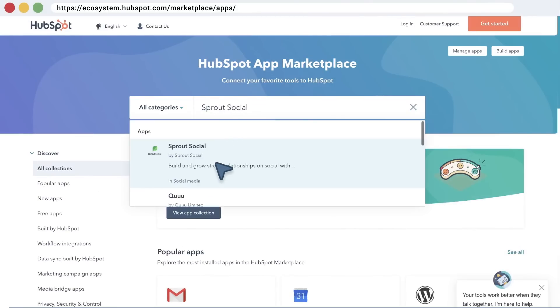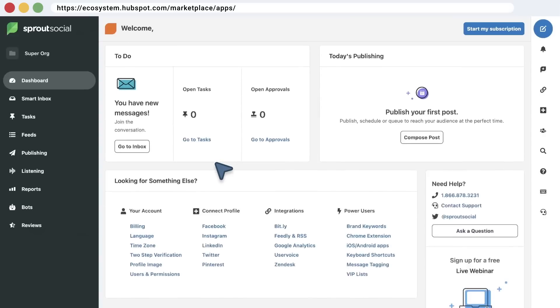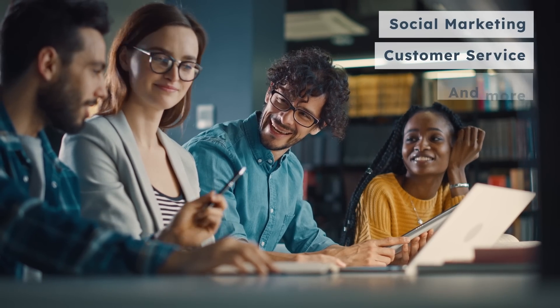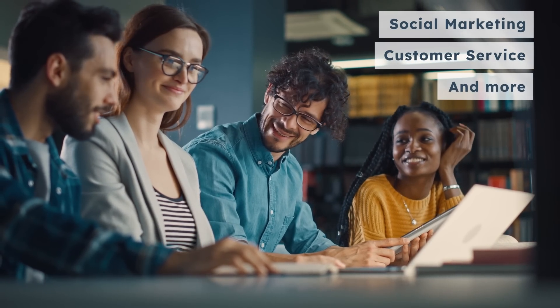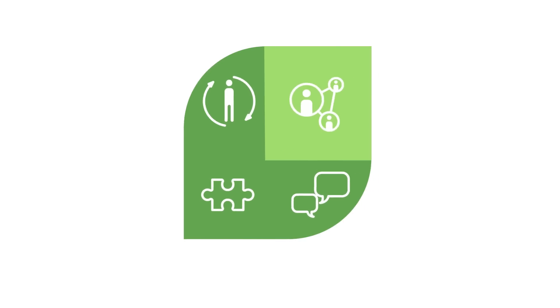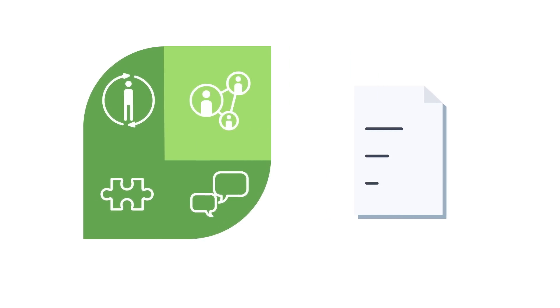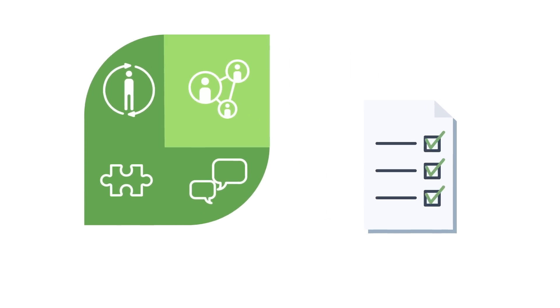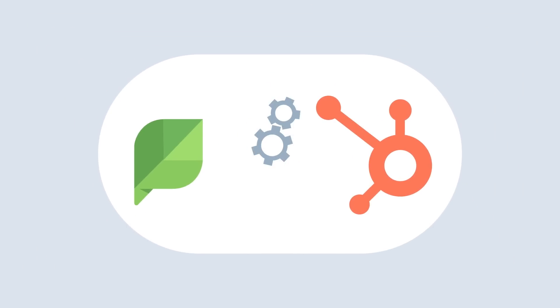One of the integrations available in the HubSpot app marketplace is Sprout Social, a social media management platform that offers solutions for social marketing, customer service, and more. As part of Sprout's care features, you can create and delegate tasks for your customer care team. By connecting HubSpot and Sprout, your social and support teams can create, track, manage, and resolve issues without leaving the app they are working on.